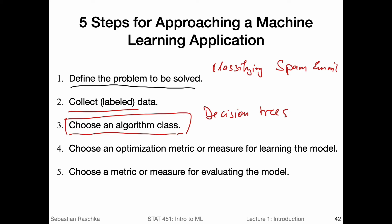Then we will choose an optimization metric — also called a measure — because not every metric is a proper metric. There are certain criteria for metrics, for example mathematically symmetry and the triangle inequality. So we choose an optimization metric or an objective function that we want to optimize. For example, in the case of decision trees, common ones are the Gini impurity, information gain, entropy, and so forth. We will cover this in two or three lectures.